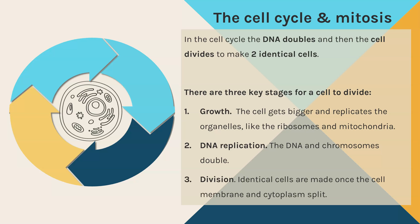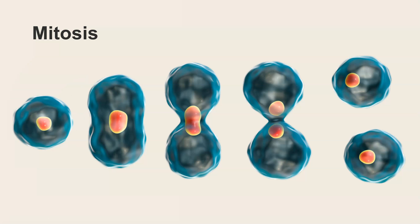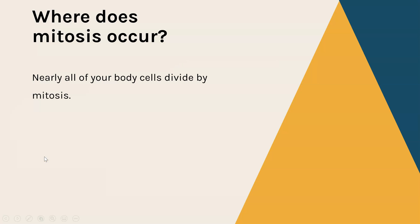The last stage is the actual cell division — the cytoplasm splits and the cell membrane splits, and that is how we get our two new cells. This diagram shows those stages: the cell has already gone through cell growth and DNA replication, and we can see the cytoplasm starting to pinch inwards and the cell membrane starting to split, until eventually it does split and we now have two identical cells — identical to each other and to the original cell they came from.